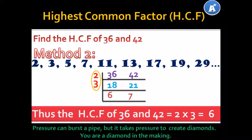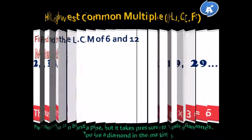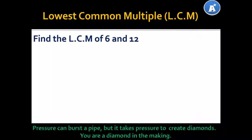Pretty simple stuff, isn't it? Let's move on to another fun thing to do — we're looking at LCM. Let's find the LCM of 6 and 12. The LCM is the lowest common multiple. Do you remember what a multiple is? A multiple is simply all those numbers that that number can go into without leaving a remainder.